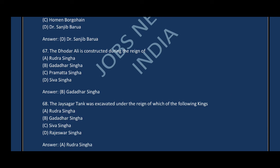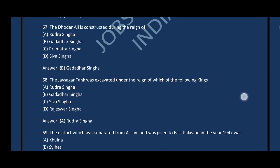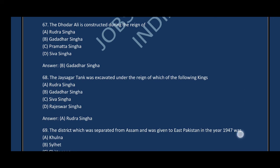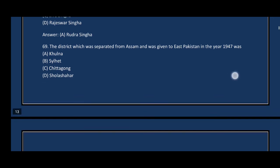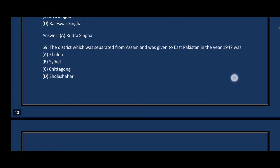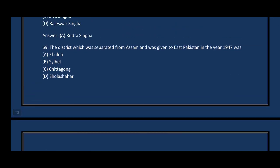Question number sixty-eight: The Joysagar tank was excavated under the reign of which king? The correct answer is option E — Rudra Singha. Question number sixty-nine: The district which was separated from Assam and given to East Pakistan in 1947 was Sylhet — actually it is now Bangladesh.